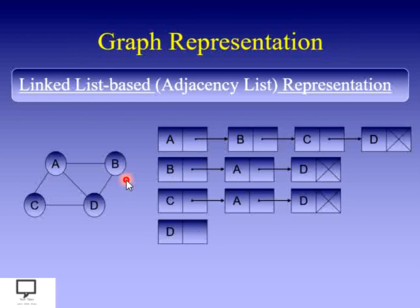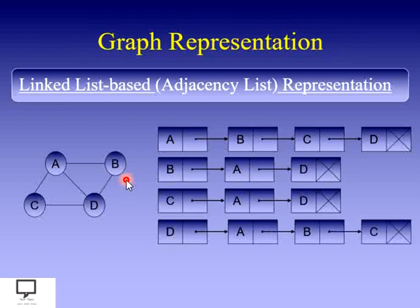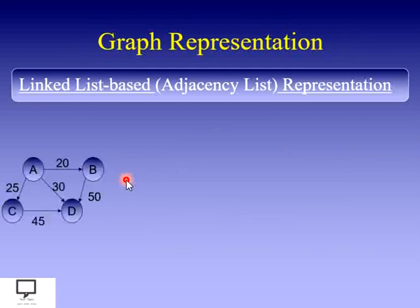For node D, D is connected to three nodes — A, B, and C — so those three appear in D's adjacency list. In this way, with the help of a linked list, we can represent the graph. The concept of adjacent nodes is what we use to build both the adjacency matrix and the adjacency list — whatever adjacent nodes exist, we represent them with a matrix or a linked list.